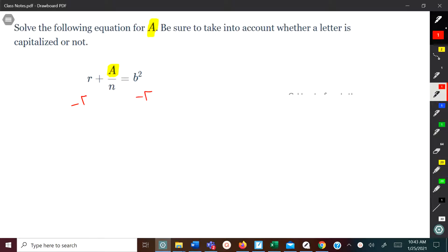That would be one step. We're going to subtract R on both sides. And what we end up with is R minus R is zero, leaving us just the A over N equals B squared minus R.